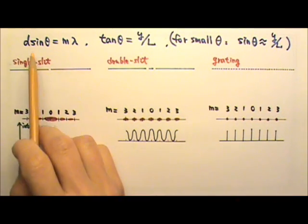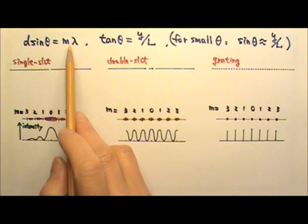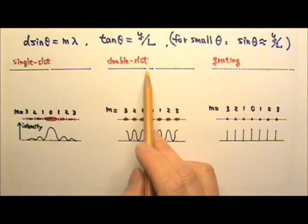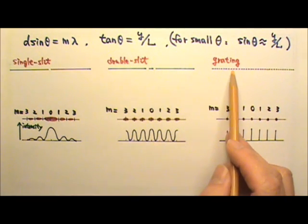For all of those, we can use the same equation d sine theta equals m lambda. The d is the width of a single slit, or the distance between adjacent slits.